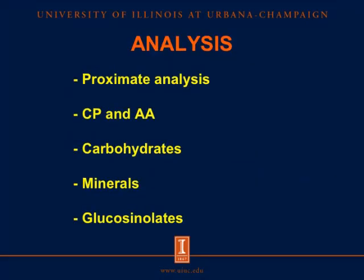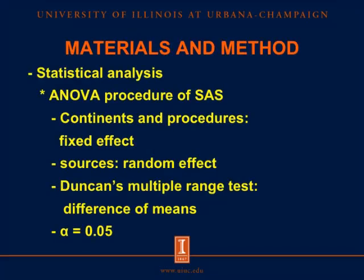We analyzed gross energy using proximate analysis. We also analyzed crude protein and amino acids, carbohydrates, minerals, and glucosinolates. Data were analyzed using PROC ANOVA in SAS. Continents and procedures were included in the model as fixed effects, and sources were included as random effects. We used Duncan's multiple range test to determine the difference of means at an alpha level of 0.05.